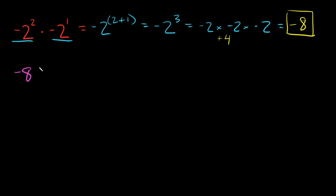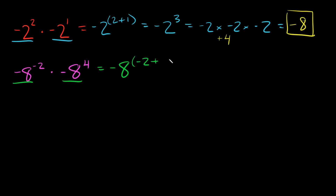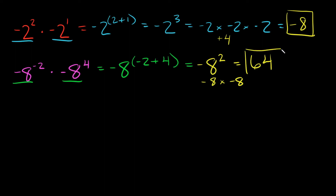What if I gave you negative 8 to the negative 2 power times negative 8 to the fourth power? Our base is negative 8, and we add the exponents: negative 2 plus positive 4 equals positive 2. So we have negative 8 to the second power, which is negative 8 times negative 8. A negative times a negative is a positive, and 8 times 8 is 64, so the answer is positive 64.